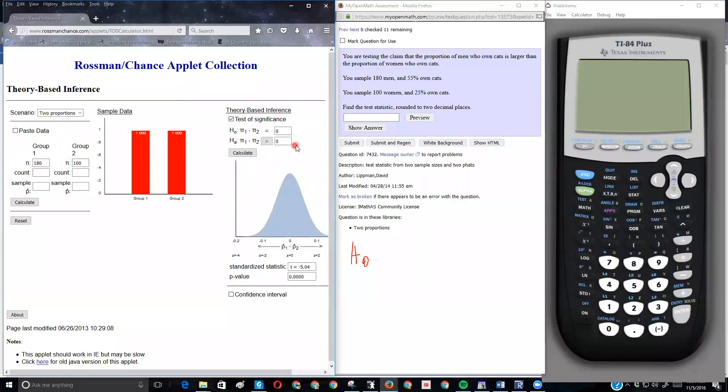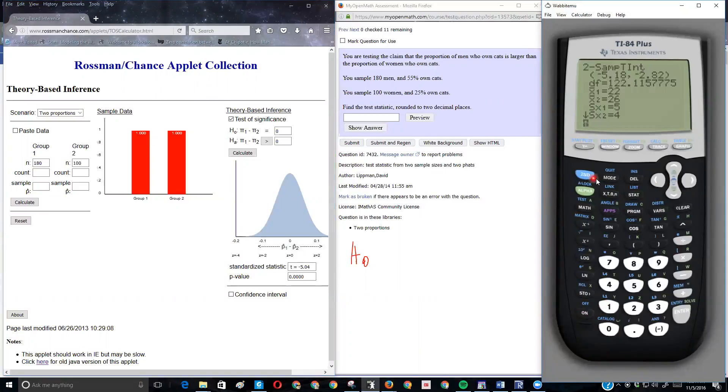Then what we've got to worry about is the counts. In this problem, they didn't tell me a count, they told me a percentage. So I'm going to find 55% of 180. 0.55 times 180 is 99. So my counts for the men is 99. If this had been a decimal value, I would have to round following the rounding rules. And I'm going to do the same thing for the women, but that's pretty easy because 25% of 100 is 25.